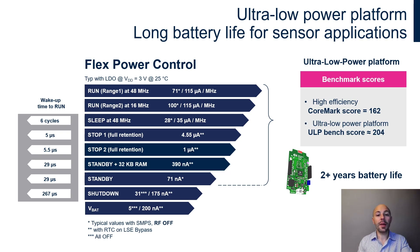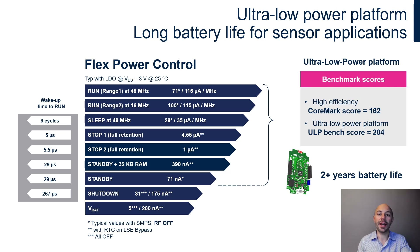If the application needs the CPU to process data, the user can use run mode, reaching a power consumption down to 71 µA per MHz. When the CPU doesn't need to run, the user can use sleep mode. In this state, peripherals can still be used and power consumption is down to 28 µA per MHz. The wake-up time back to run mode is very fast — just a few cycles.